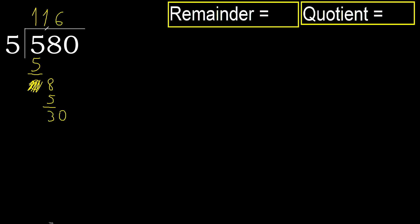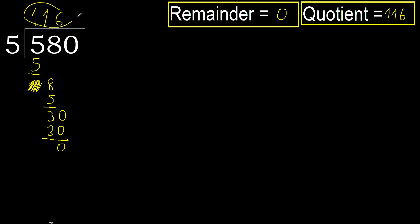5 multiplied by 6 is 30, which is not greater. Subtract. There is no remainder, therefore finished. 580 divided by 5 is 116.